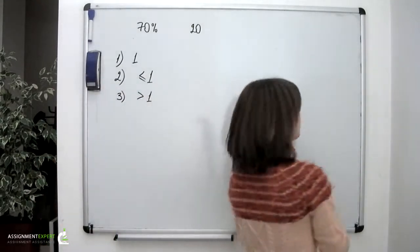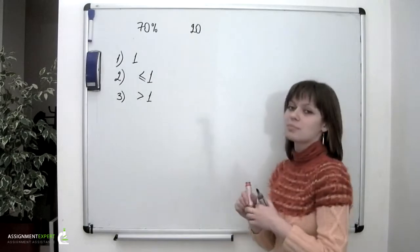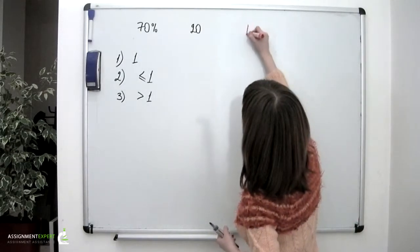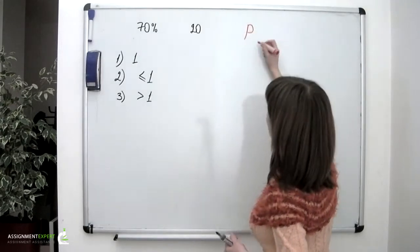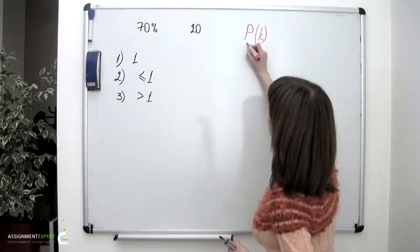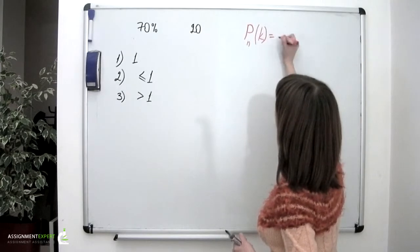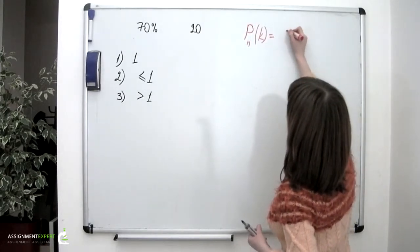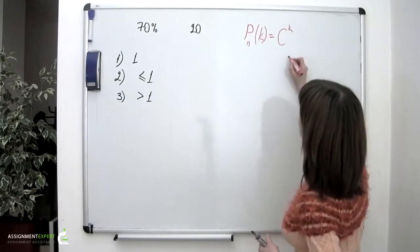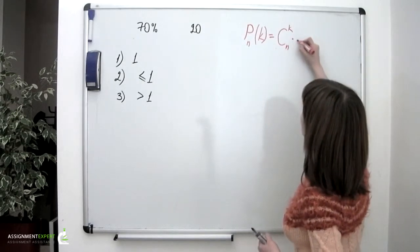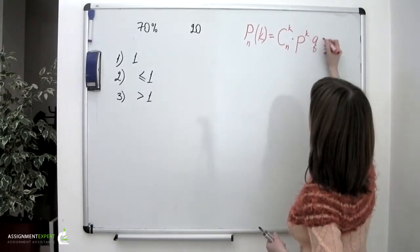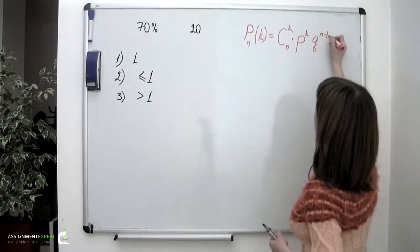To calculate these probabilities we are going to use Bernoulli's formula. The probability of k successes out of n trials is equal to the combination of k successes out of n trials, times p taken to the kth power, times q taken to the power of n minus k.